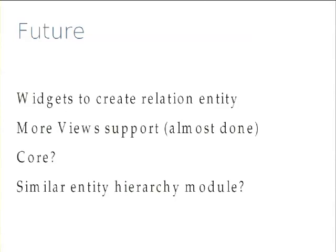Some quick things about future plans: we're looking into creating a widget for doing relations, and more Views support is almost done. Another project we want to look into is replacing core relations, because in core there are all sorts of different types of relations, everything implemented in its own way, everything works differently. Having a very consistent relation model in core would be something we probably want to have.